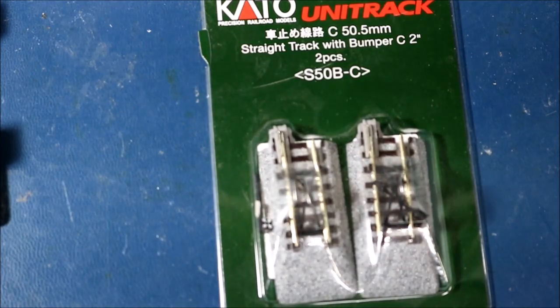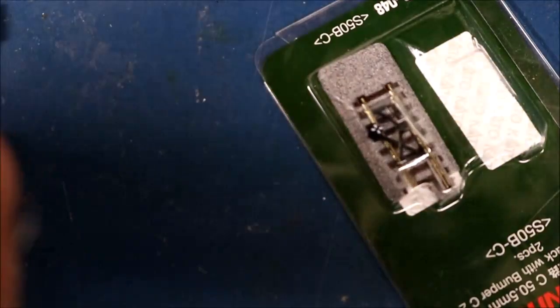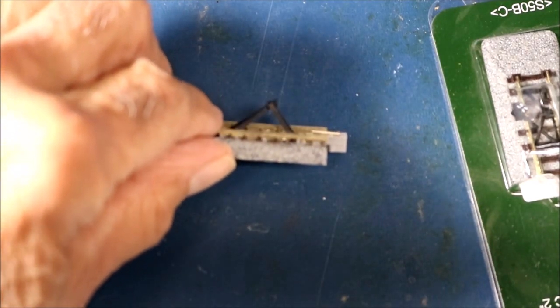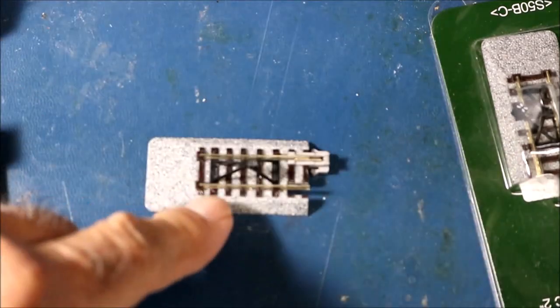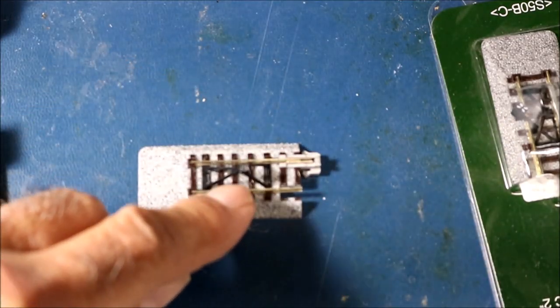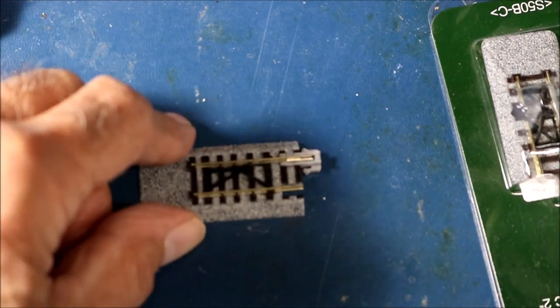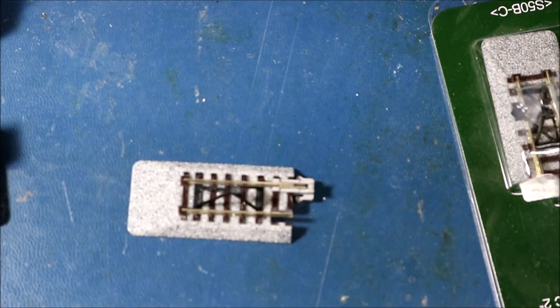There's another type of bumper - these are straight track with a bumper, called bumper C2. They look like this. I use these also. The difference is that in making these, I drill a little hole in the center of the track for a smaller LED, and I can see it quite visibly that way too, so I have both kinds of tracks.